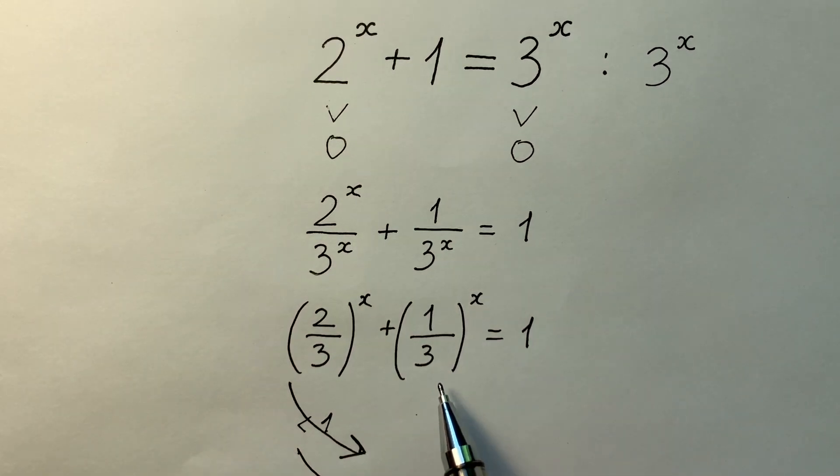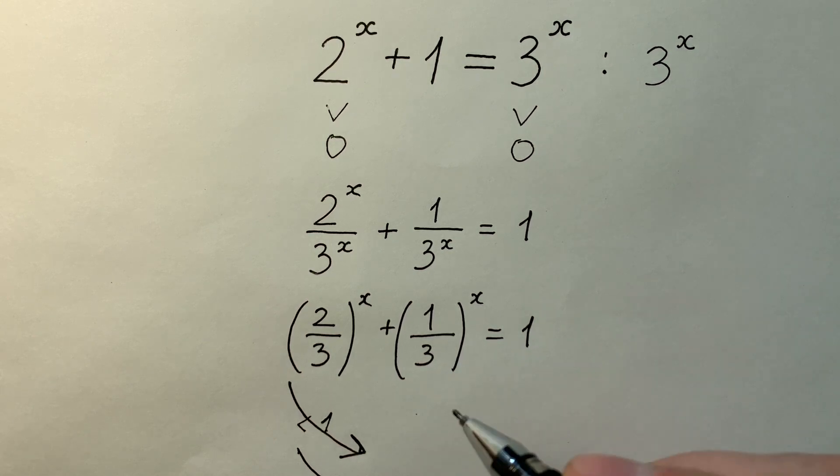The second exponential function is also having the base less than 1. The base is 1/3, so it's also decreasing.